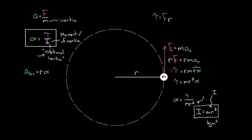We only considered one force, but you could imagine many forces on this object. In that case, you just use the net force to get M times A, and you use the net torque up here. This formula still works with multiple torques — you just add up all the torques, where torques rotating the object one way are positive and torques rotating it the other direction are negative.